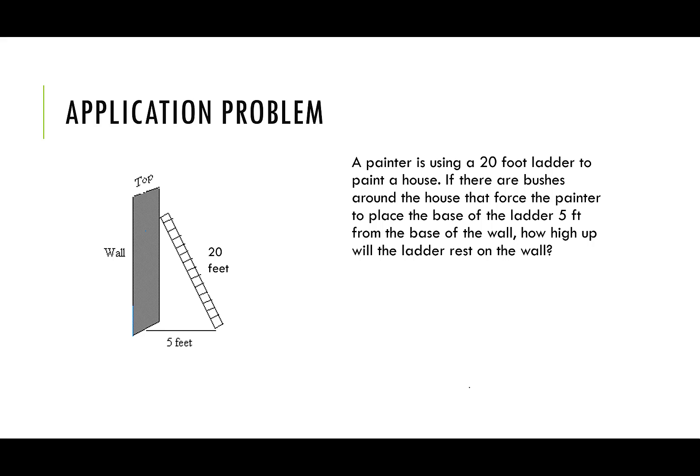Let's try this in a word problem. A painter is using a 20-foot ladder to paint a house. If there are bushes around the house that force the painter to place the base of the ladder 5 feet from the base of the wall, how high up will the ladder rest on the wall? So we can picture, here we have this ladder. It's 20 feet high. So it's 20 feet long, but there's some bushes. I'll draw some bushes. There's some bushes in the way where we can't put the ladder right up against the wall. We have to kind of bring it out farther past the bushes. And we want to know, well, how high are we going to reach now? So this is Pythagorean theorem.